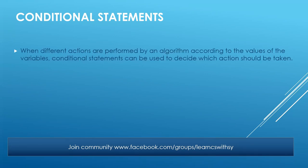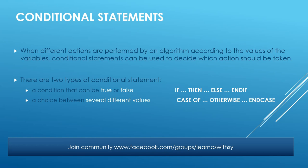Now, what is a conditional statement? Whenever you have different situations or different options available to you, we need to use a conditional statement. The algorithm is going to use a conditional statement when it has a set number of actions to be performed and needs to decide which action to take. There are two types: the first is 'if then else end if,' and the second is 'case of otherwise in case.' When do we use which? If you have two options — true or false — we use 'if then else end if.' But if you have more than two options or different values to choose from, we always go for 'case of otherwise in case.'